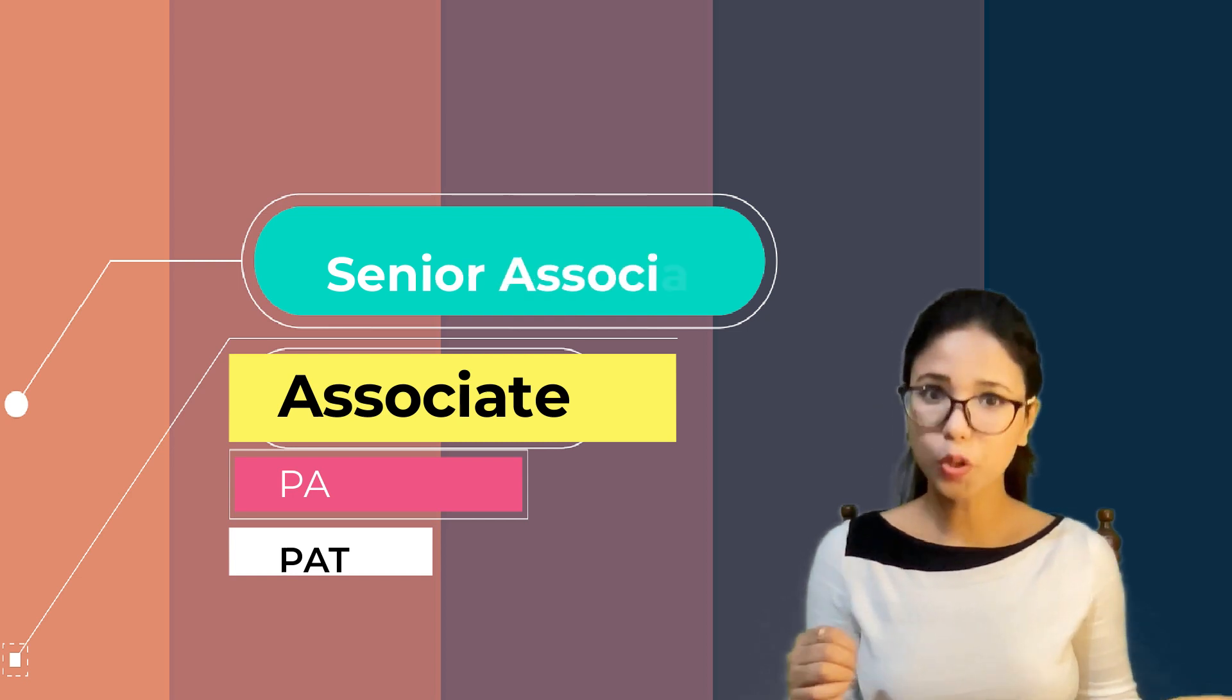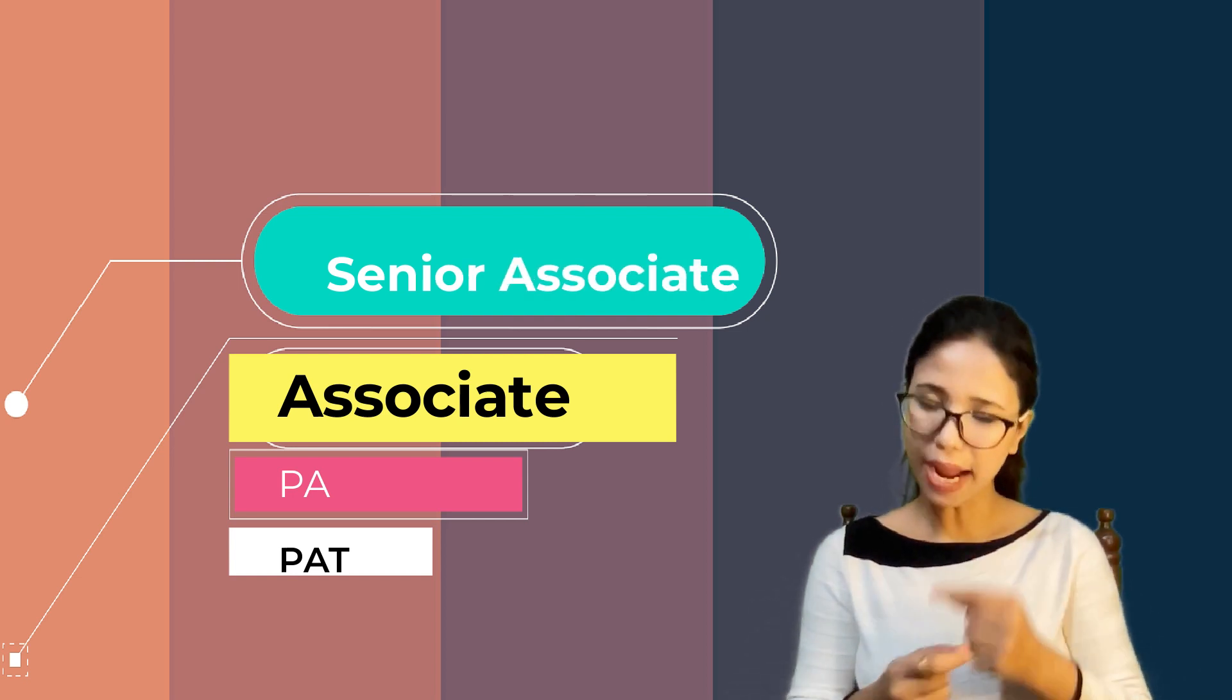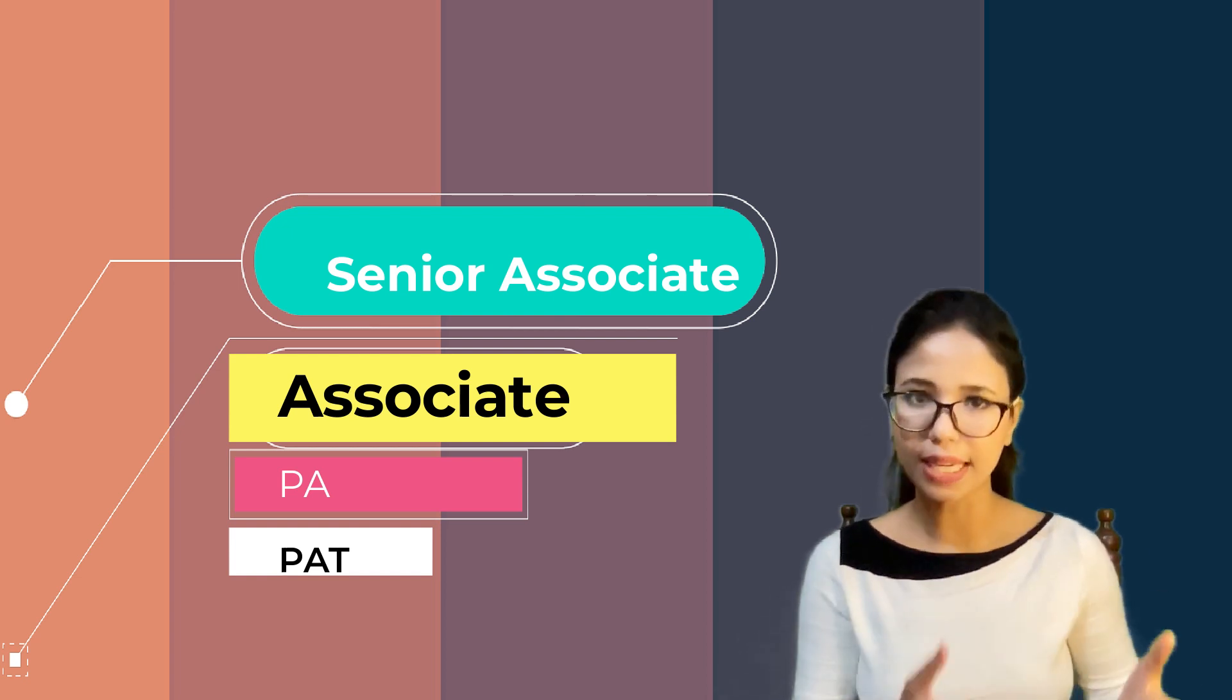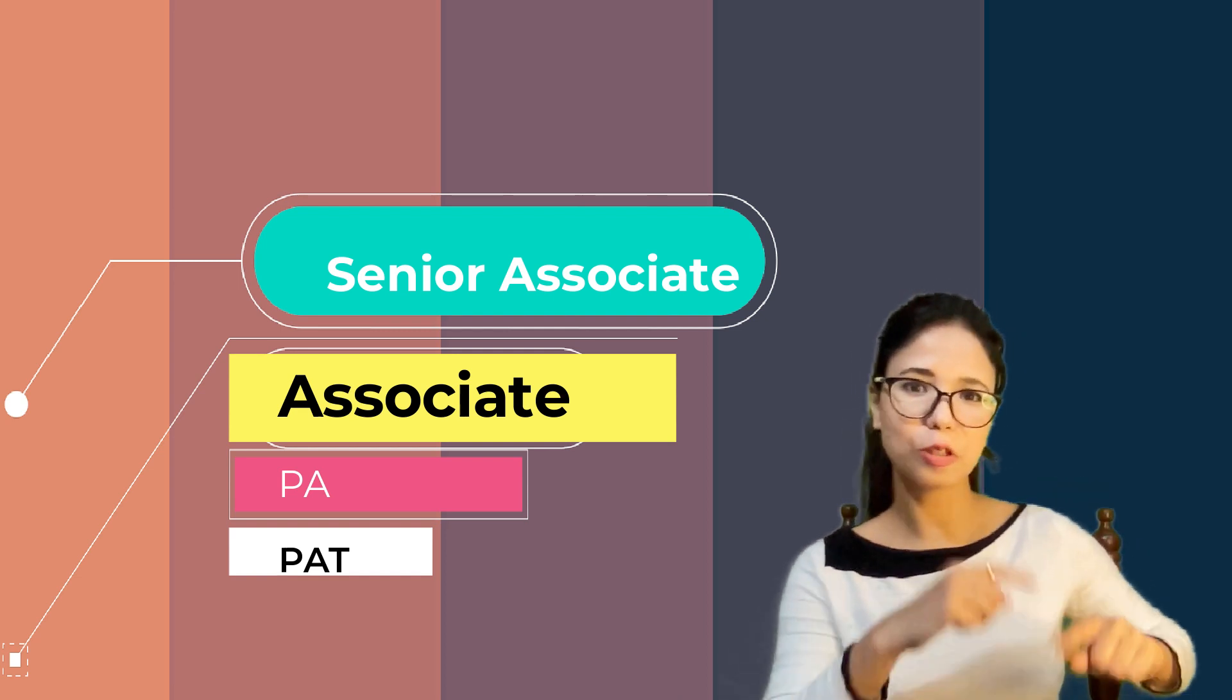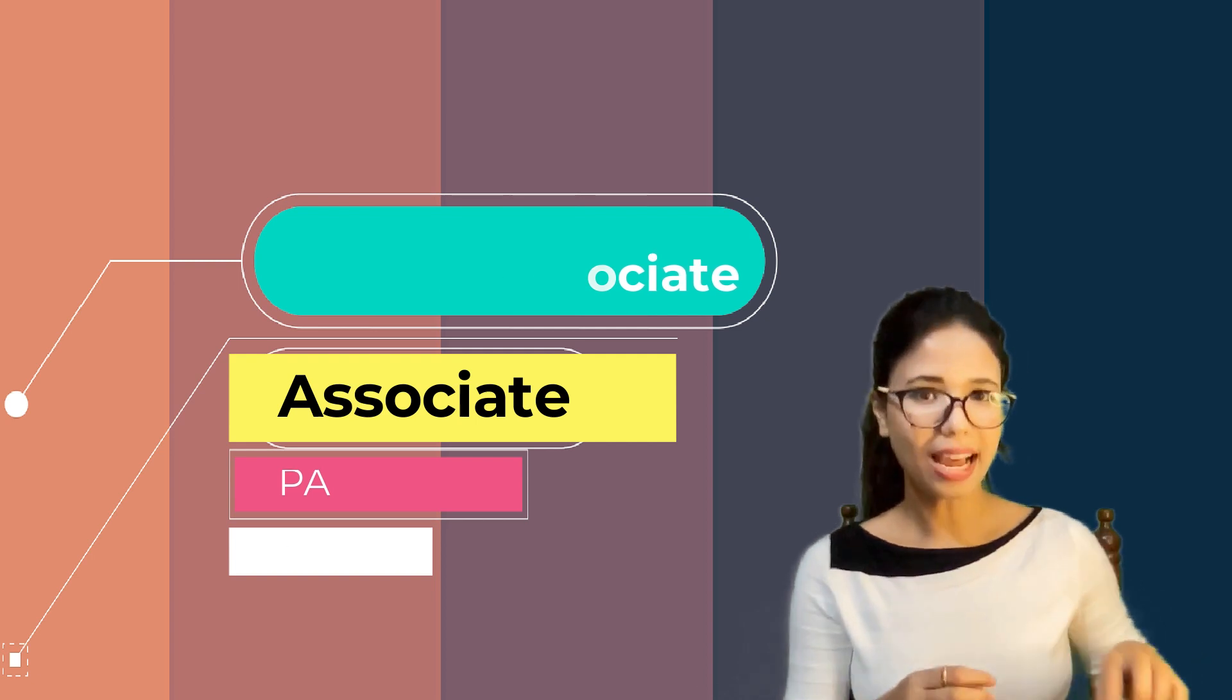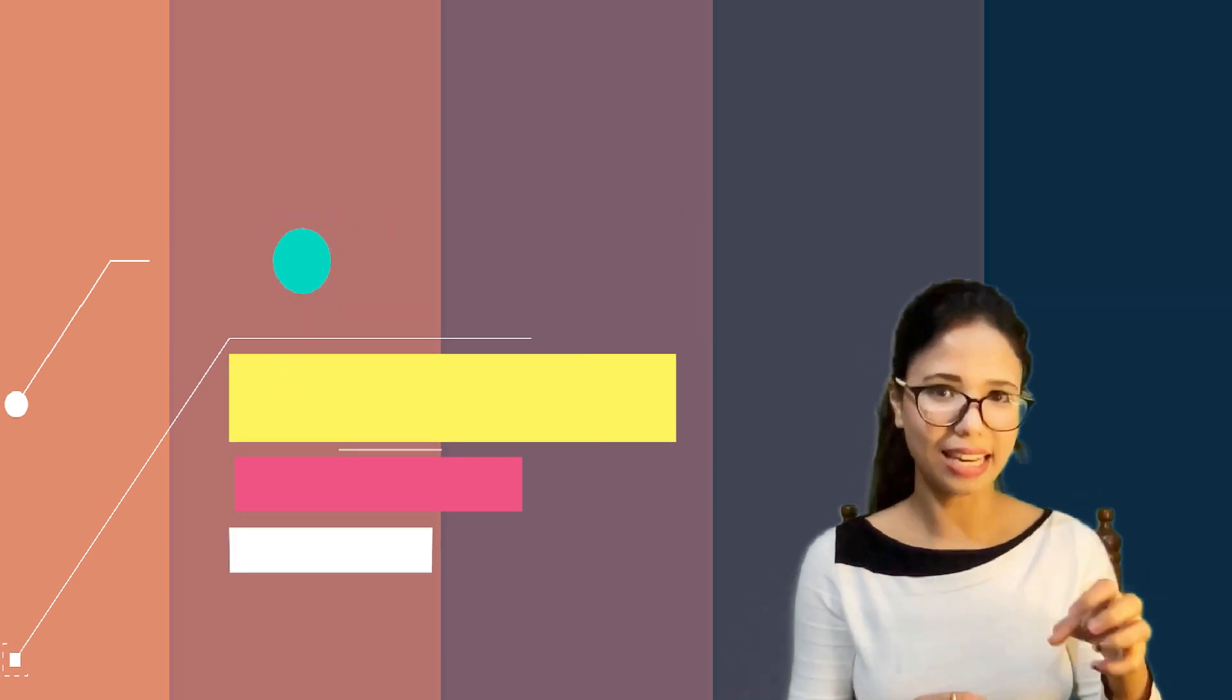So here you are at a PAT level if you're a fresher, and by default, in one year, you will be converted into PA. Now, to become an Associate from PAT, it's not like a jump. If you're hired as PAT, you have to become first PA, then Associate.